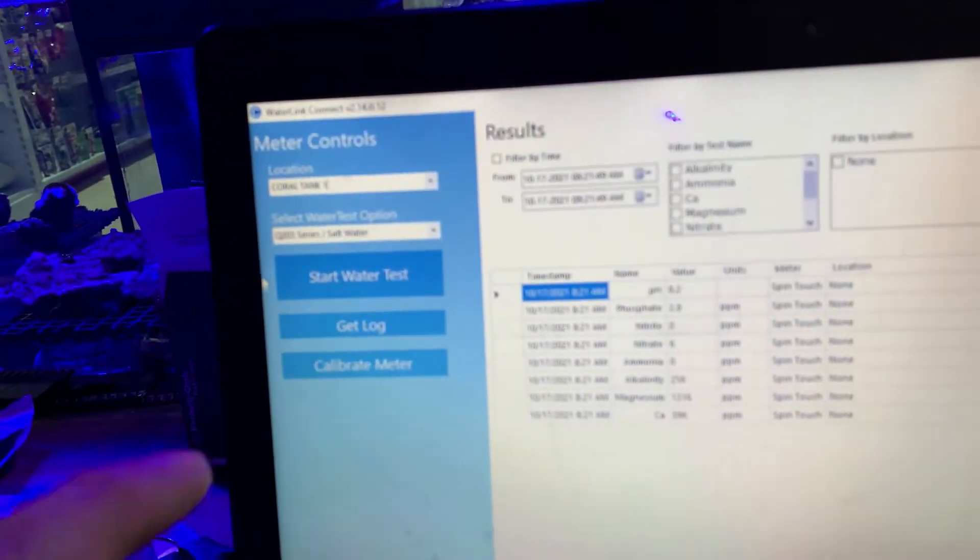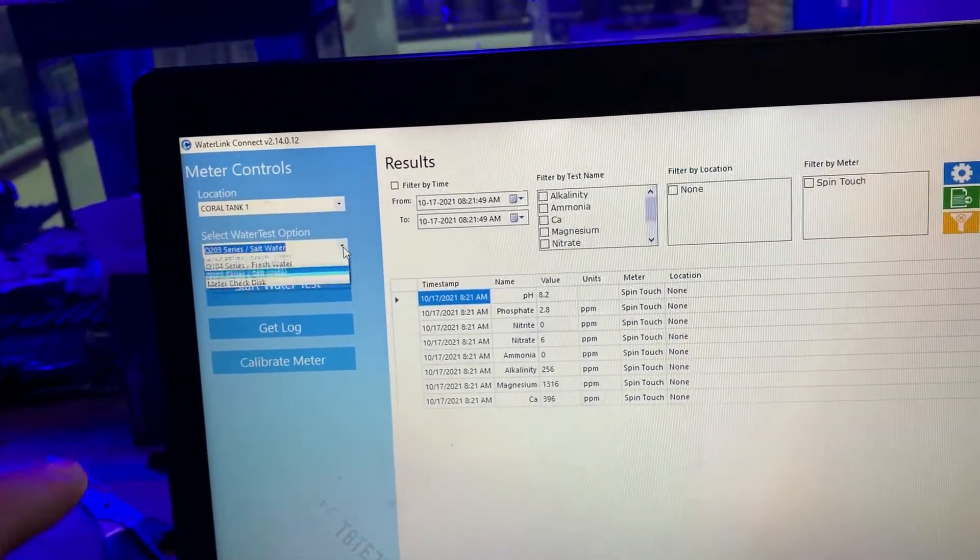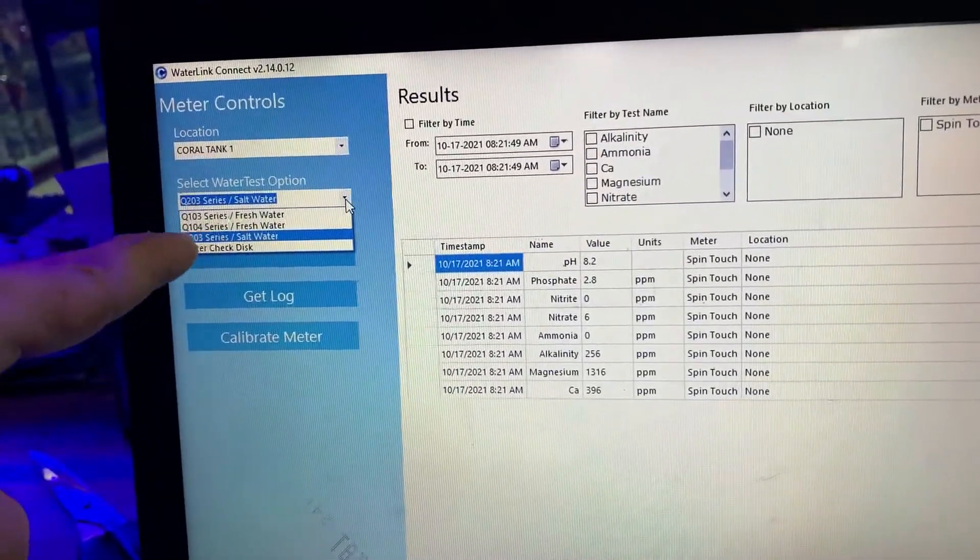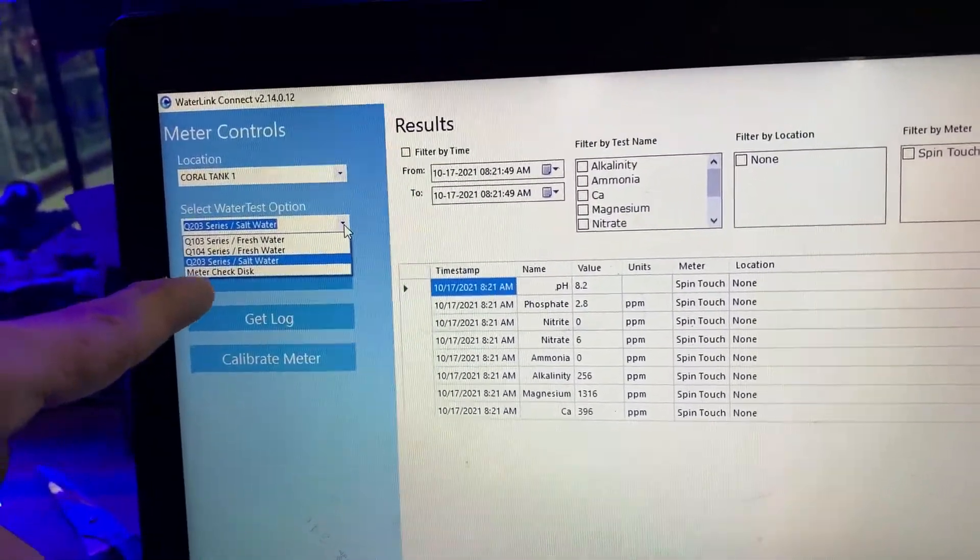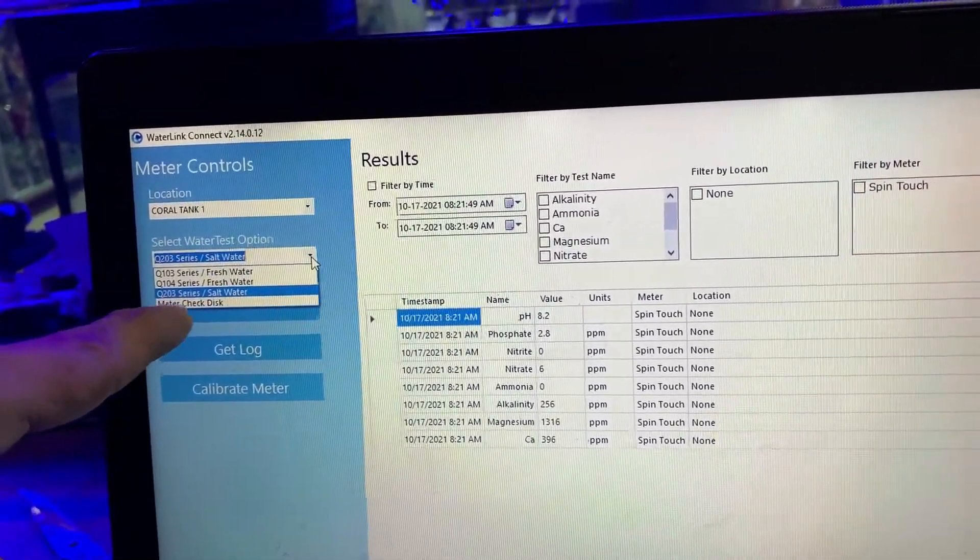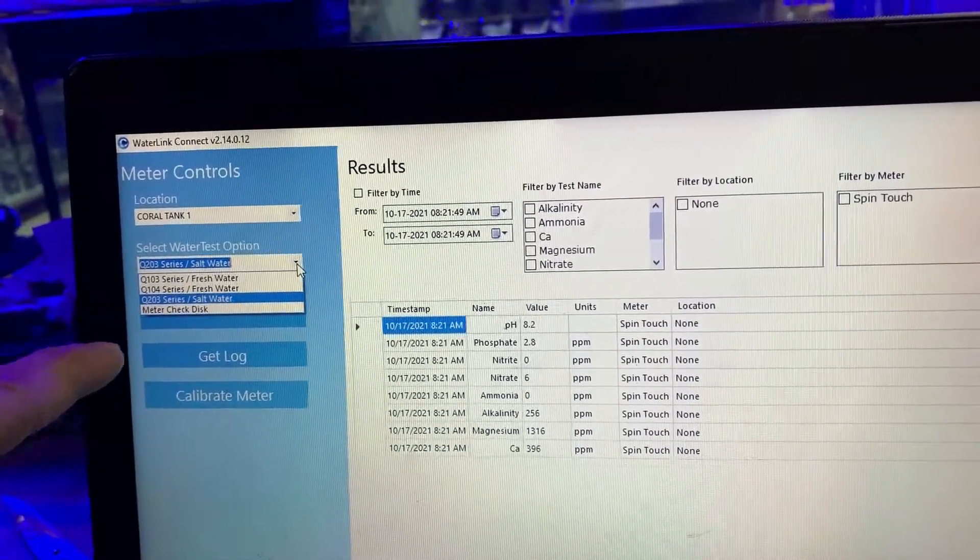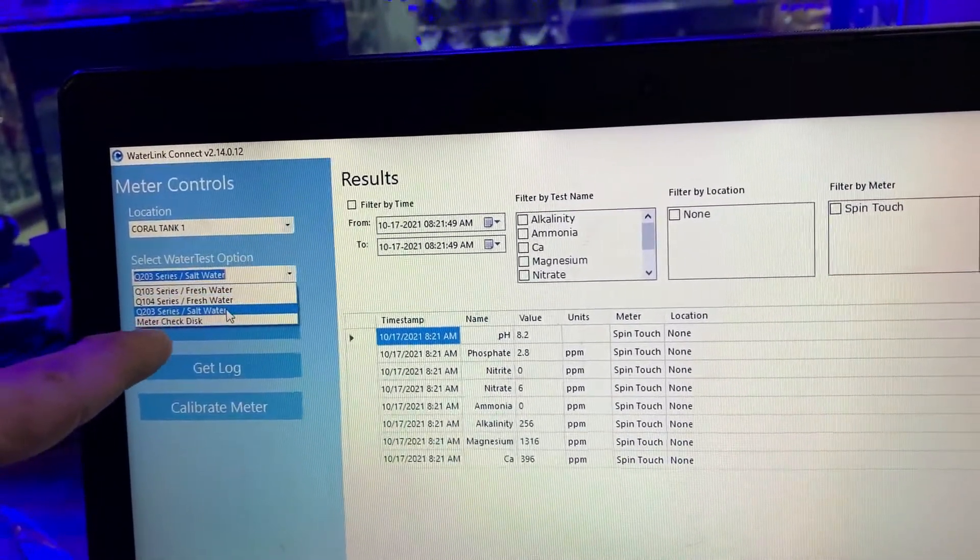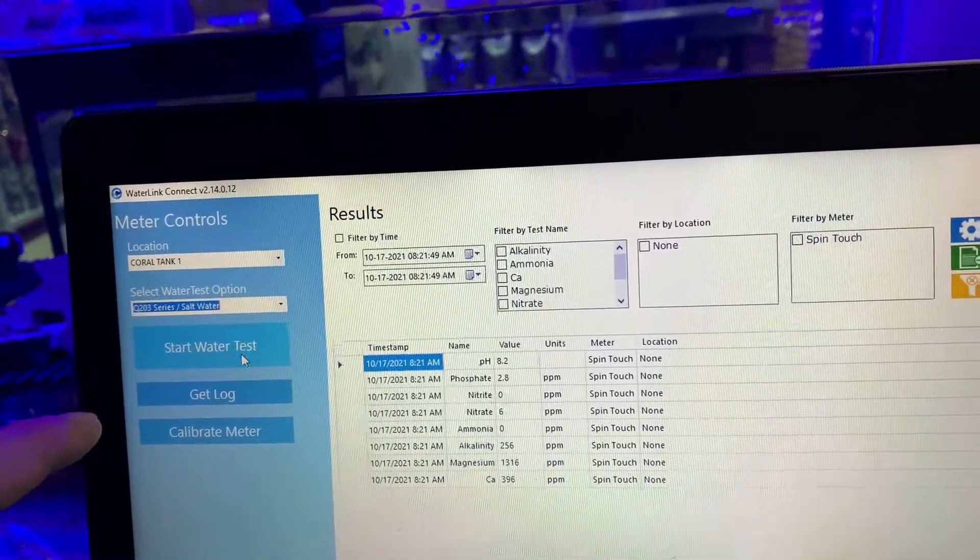I choose salt water. There's some option here where you can choose fresh water, then salt water. Then, method check disc. This method check disc is actually for calibration. What we are going to do now is test the salt water. Let's start.